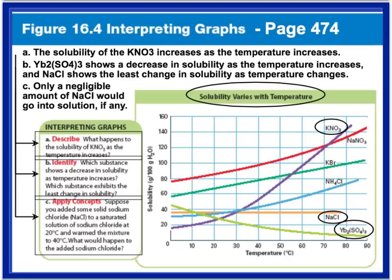The last question asks: suppose you added sodium chloride to a saturated solution of sodium chloride at 20°C and warmed the mixture to 40°C — what would happen? Only a small amount would actually dissolve; the rest would sit at the bottom of the container, because as we said, salt doesn't really increase in solubility as temperature increases. Lines curving upward represent a positive slope; lines going down represent a negative slope.